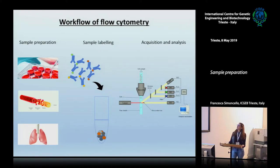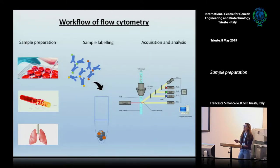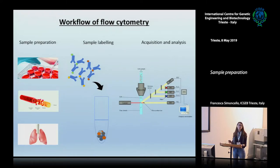In general, the workflow of flow cytometry starts with the sample preparation. You can have a cell culture, you can have blood or different types of tissue, but in any case, the aim of this first step is to obtain a single cell suspension in order to be able to label every single cell with specific antibodies that are labeled with fluorophores. Then you have to acquire your data and do the analysis. So the sample preparation is the very first step to obtain your results.